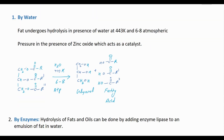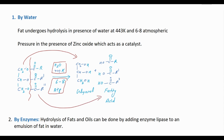The first type is hydrolysis in the presence of water at high temperature — 443 Kelvin — and 6 to 8 atmosphere pressure. Under these conditions, fats and oils break down and you get the glycerol part and the fatty acid part.